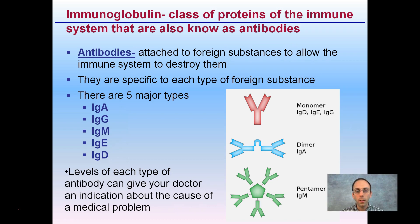What is an antibody? Antibodies attach to foreign substances to allow the immune system to destroy them. It's important to note that the antibodies are not the ones doing the destruction — they merely attach to surfaces to signal the immune system to come destroy the foreign substance. They're specific to each type of foreign substance, so the variable region's specific shapes match a very specific foreign substance.